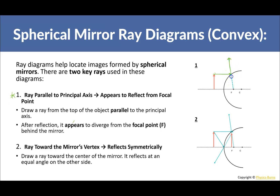The second ray goes toward the mirror vertex using symmetry. The reflected ray goes outward, but the diverging extensions inside the mirror converge to a point. From that intersection, we can see the image — it's smaller and located inside the mirror behind the reflecting surface.